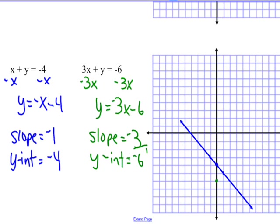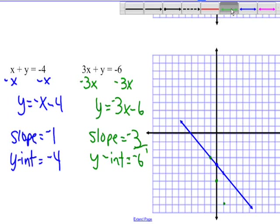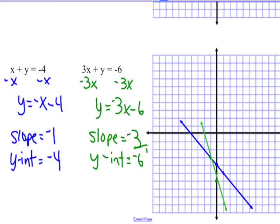This time our slope is negative 3. We might want to put that as negative 3 over 1, so we can go up 3 and left 1. Down 3 and to the right 1 also works. We'll go ahead and draw this line. We can see our point of intersection, it jumps right out at us: (−1, −3). And if we plug that back into both of our equations, it'll work.